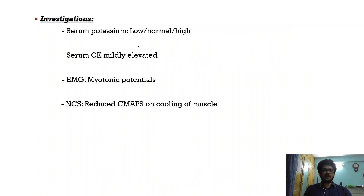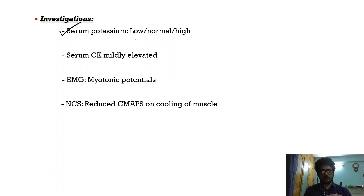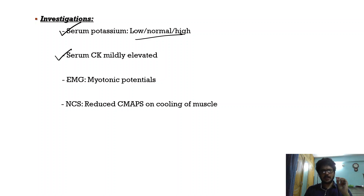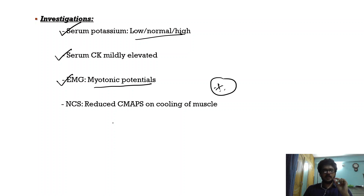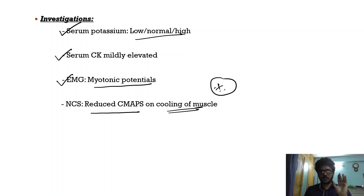Coming to investigations: the serum potassium is variable — it can be low, normal, or high. Serum creatine kinase can be mildly elevated, and the EMG is going to show myotonic potentials. Very importantly, patients will have reduced compound muscle action potentials on cooling of the muscle. This finding is classically seen in paramyotonia congenita.